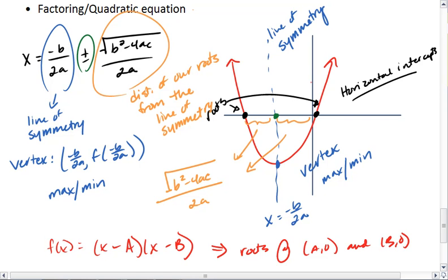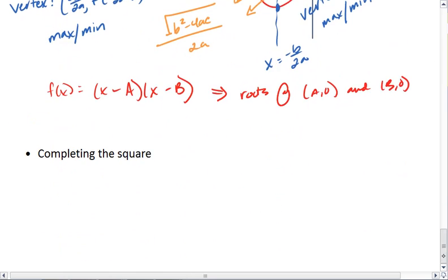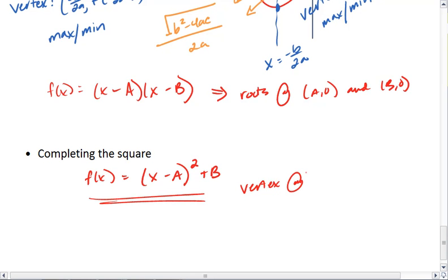But more important and more complex is how the quadratic equation ties in with our graph. We've also seen that with completing the square, if we're able to complete the square and we get it into this general form, then our vertex is at a comma b.